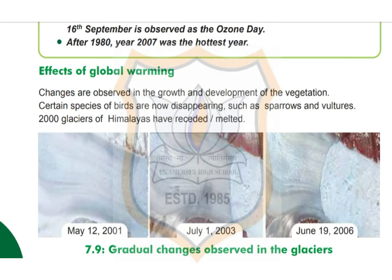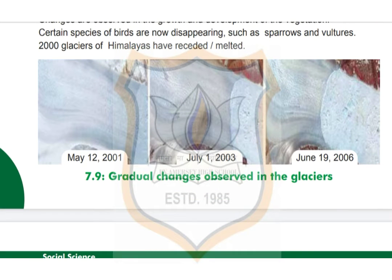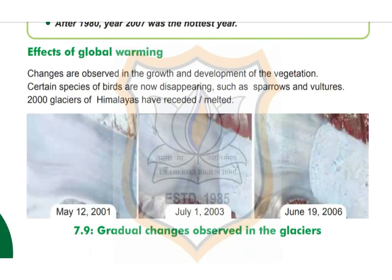Now, the effects of global warming: changes are observed in the growth and development of vegetation. Certain species of birds are now disappearing, such as sparrows and vultures. 2000 glaciers of the Himalayas have melted. You can see pictures showing gradual changes in glaciers — from 12th March 2001, to 1st July 2003, and then 19th June 2006. Destructive effects include impact on vegetation, birds, animals, water resources, agriculture, soil, seasons, coastal areas, and human beings.